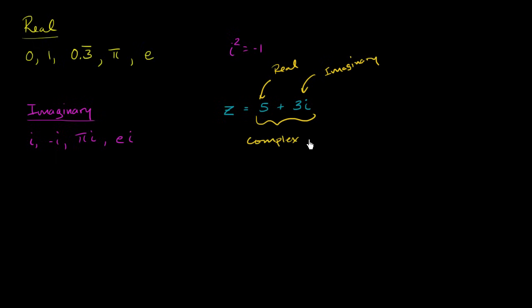And sometimes you'll see notation like this where someone will say, well, what's the real part? What's the real part of our complex number z? Well, that would be the 5 right over there. And then they might say, well, what's the imaginary part? What's the imaginary part of our complex number z? And typically the way that this function is defined, they really want to know, well, what multiple of i is this imaginary part right over here? And in this case, it is going to be 3.